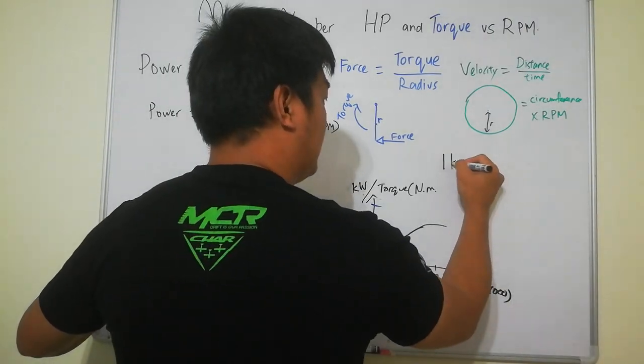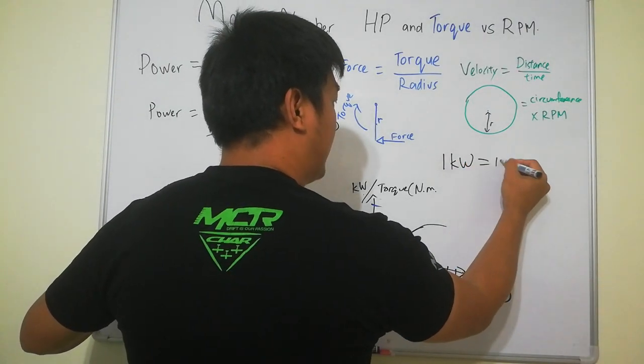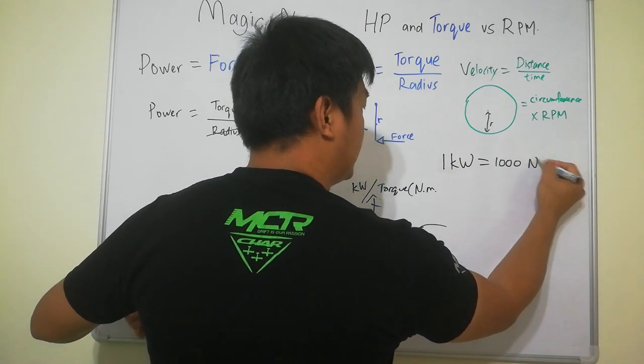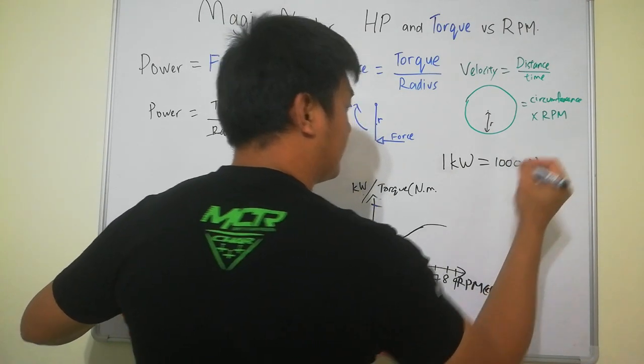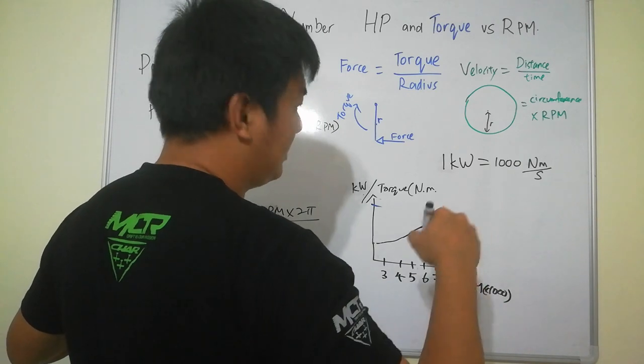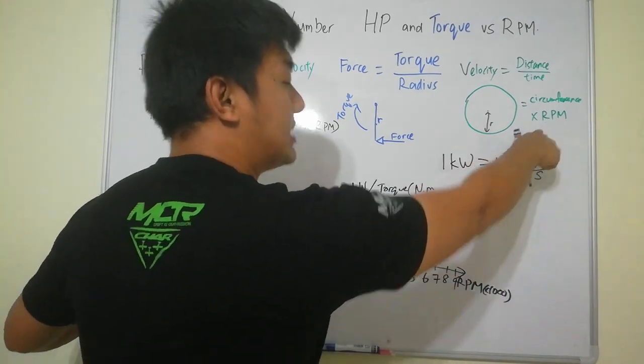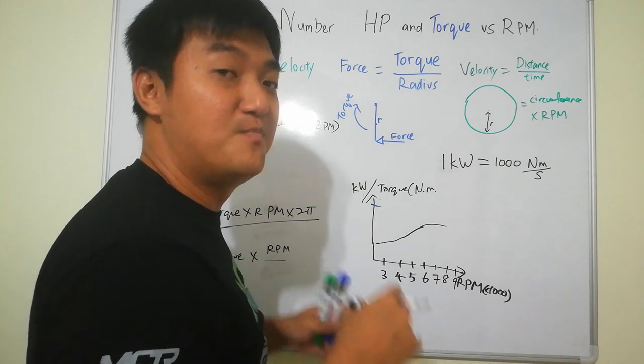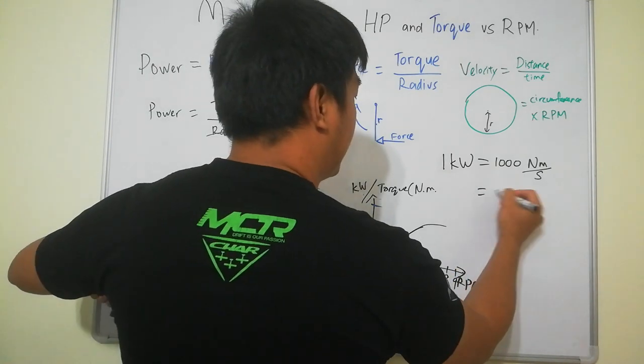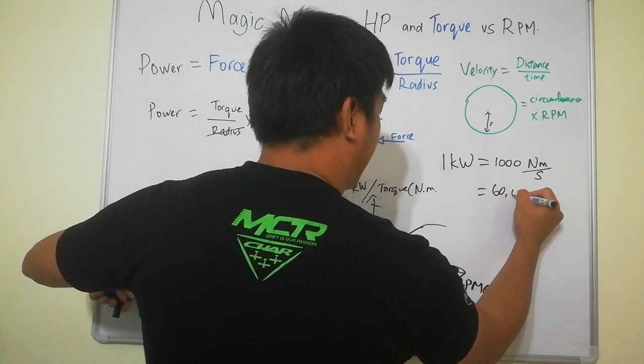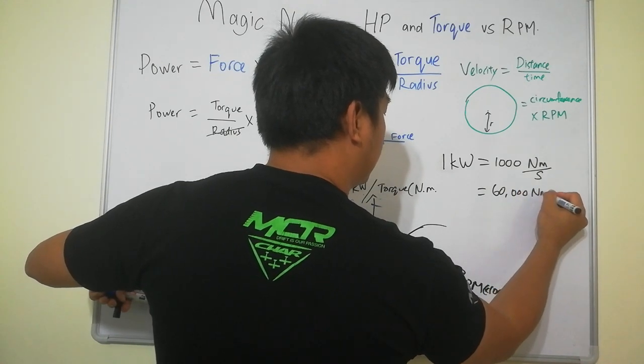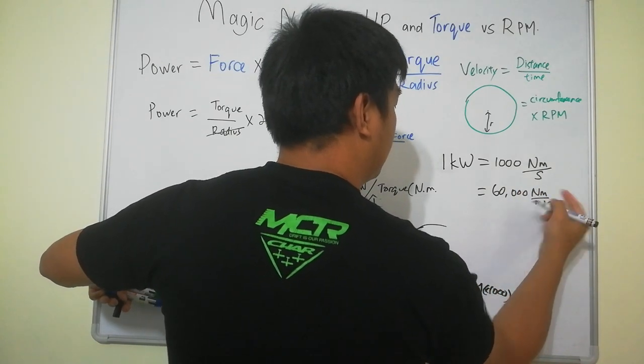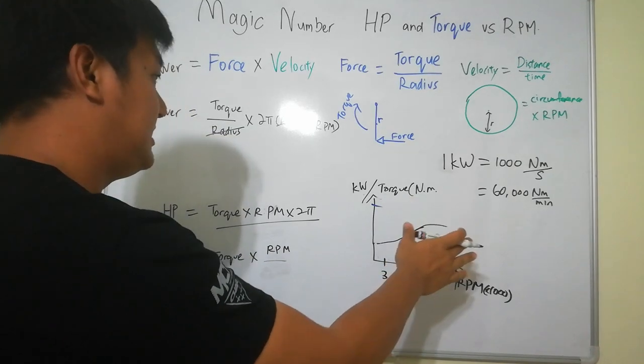So this one is very easy. One kilowatt is one thousand newton meter per second. So if I want to change it to minute because our engine we always measure in RPM revolution per minute, so I can say that it is 60,000 newton meter per minute. So this becomes very easy.